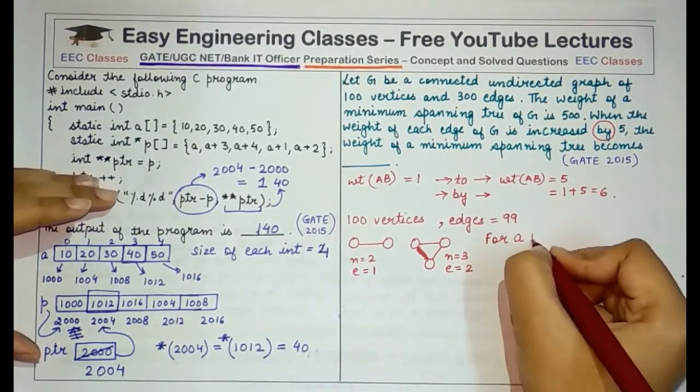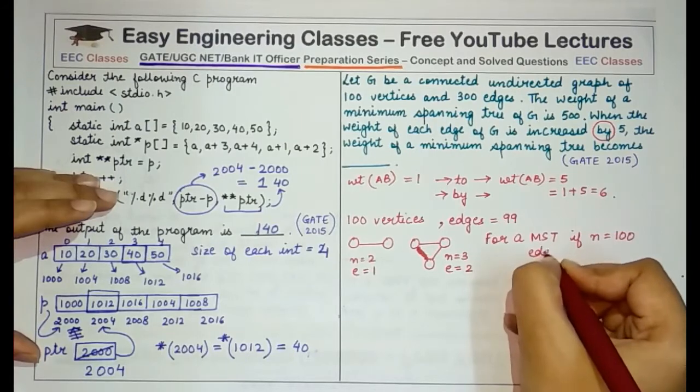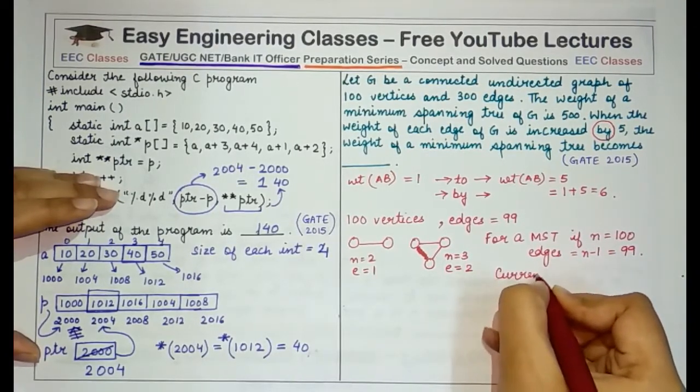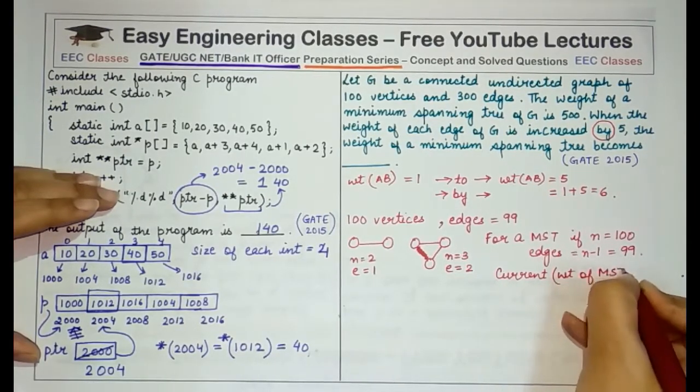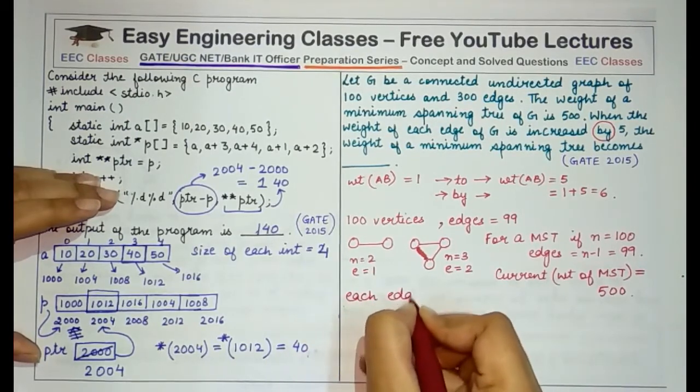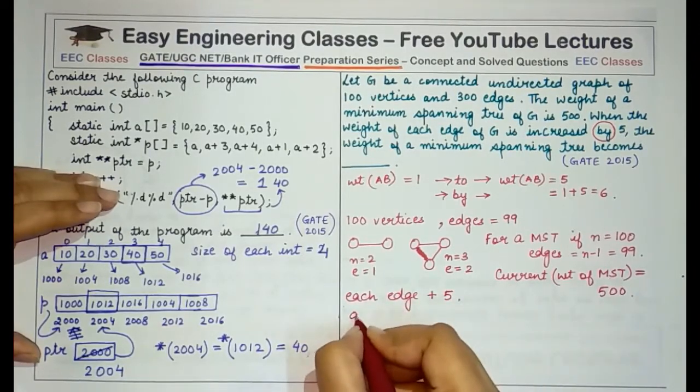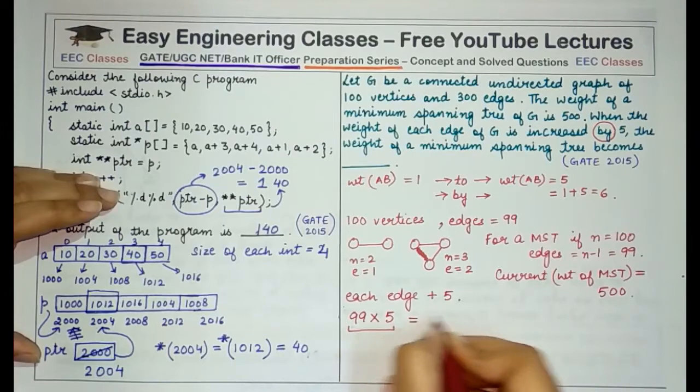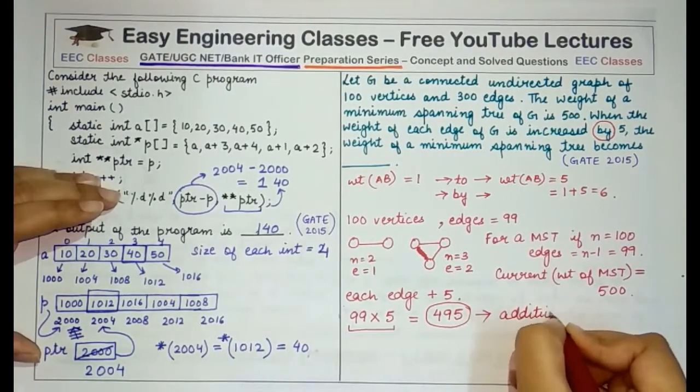So for a MST, if we have the number of nodes as 100, then number of edges would be n minus 1 which is equal to 99. Now, the current weight of the MST is 500. And this weight is increased by 5. That means each edge now has its original weight plus the weight 5. So there are 99 edges and an additional weight of 5 in them. Therefore, 99 into 5 would give you a total of 495. This is the amount of additional weight that would be present in the MST now.